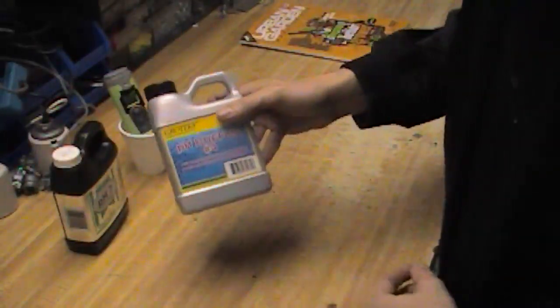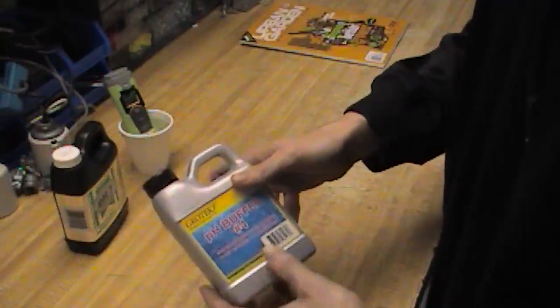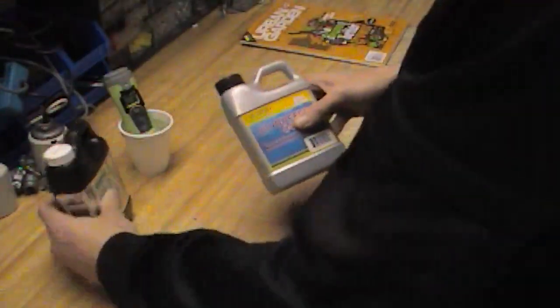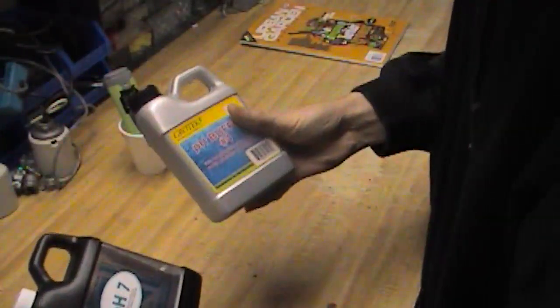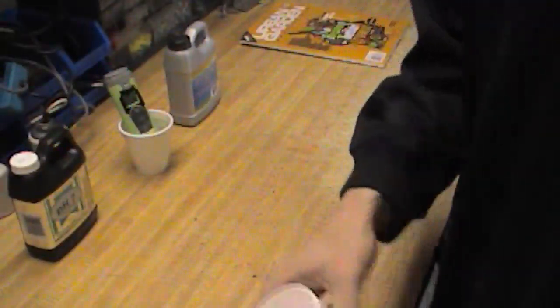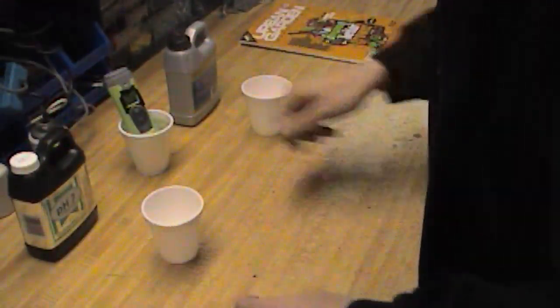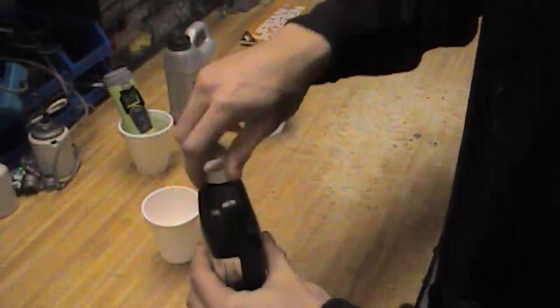I've got here pH 7 and pH buffer 4. These are the calibration solutions, buffered at pH 7 and pH 4. I got a couple styrofoam cups here, I'm just going to put a little bit into each one.